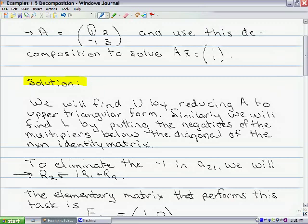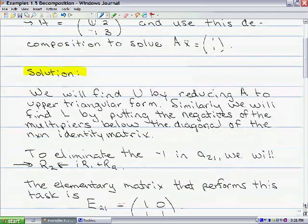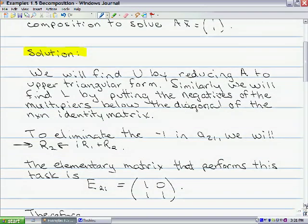So the elementary matrix that we need to perform this task is going to be E21, and it's equal to 1, 0, 1, 1, because this entry is going to be the multiplier.